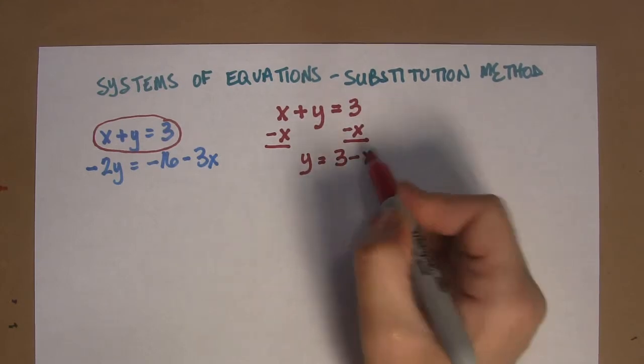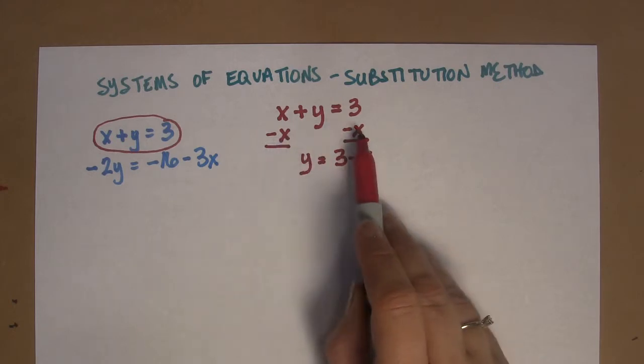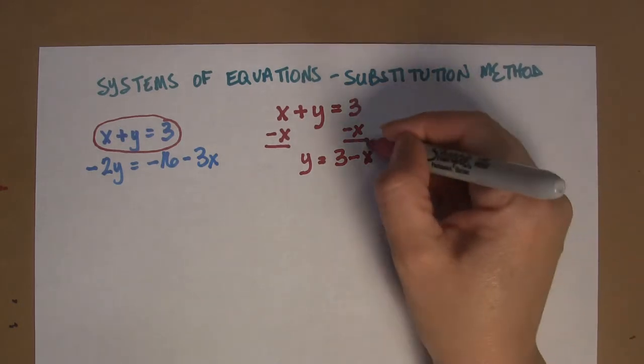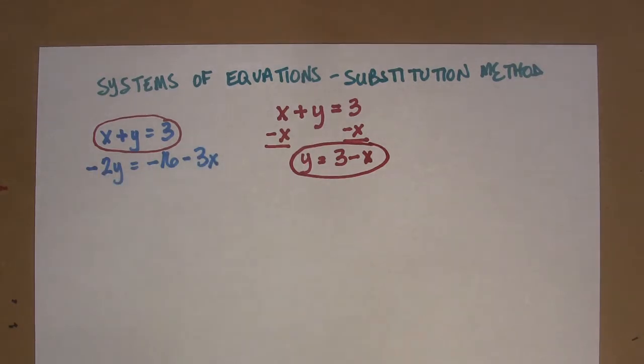In this case, I'm getting the y by itself. I subtracted x from this side. I subtracted x from the other side of the equation, and I get y equals 3 minus x. To me, that's easier than lining everything up.